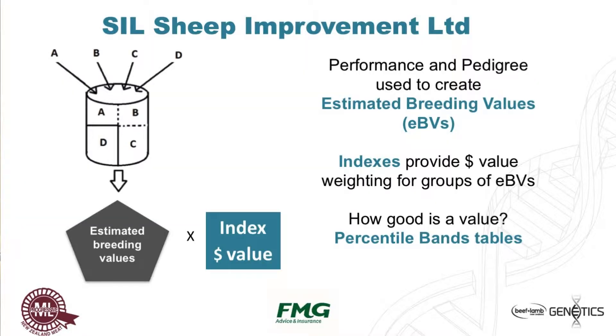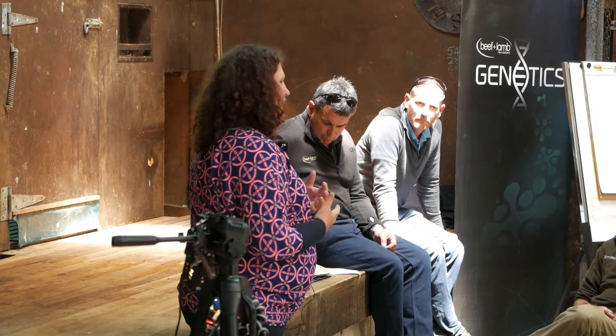With that container we look at pedigree and performance data to lead into breeding values — getting an estimate of the merit of that animal as a parent, not just the way it looks in front of you, but what progeny they're going to make. The next layer is weighting: how much importance should I put on this trait over another? We put economic weighting about how much money that's going to make you on farm, and it comes in a dollar value now.